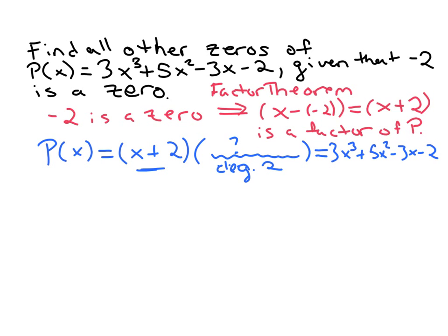Because we had degree three, we're factoring out one power of x, so this is going to be degree two in this missing piece. So what we want to do is solve for that missing factor.